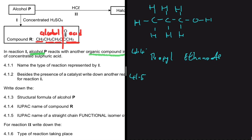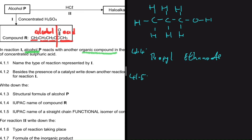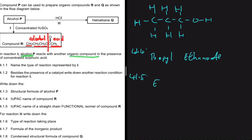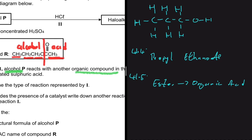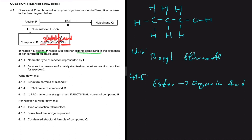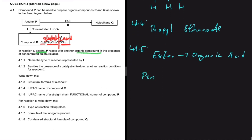For 4.1.5, write down the IUPAC name of a straight chain functional isomer of compound R. The functional isomer of an ester is an organic acid — a carboxylic acid. We count the carbons on the ester: one, two, three, four, five — so we need a carboxylic acid with five carbons. The question specifies straight chain, so we can't use something like 2-methylbutanoic acid; we go with pentanoic acid.